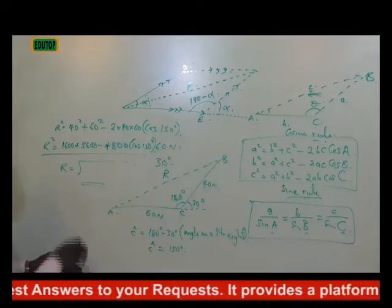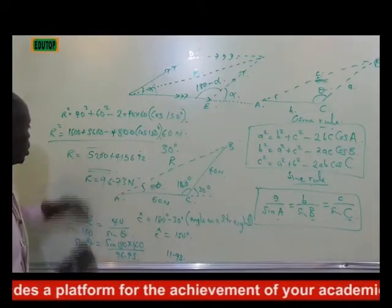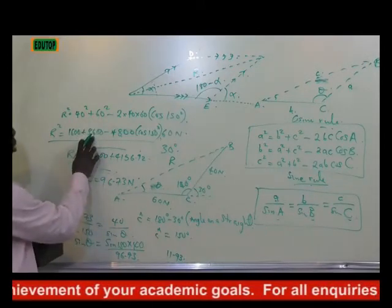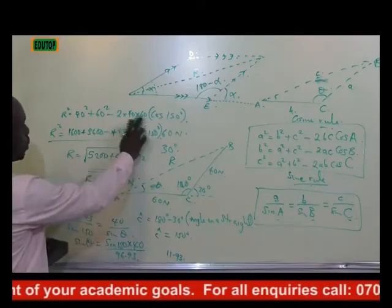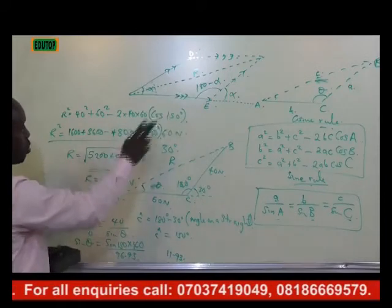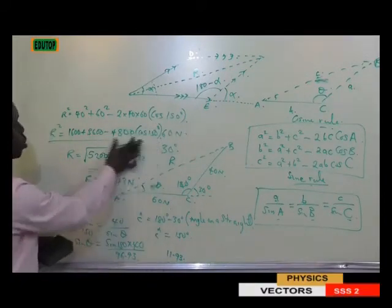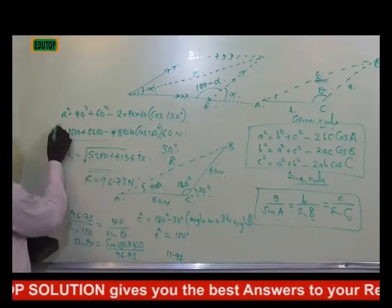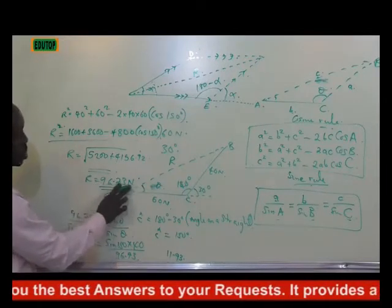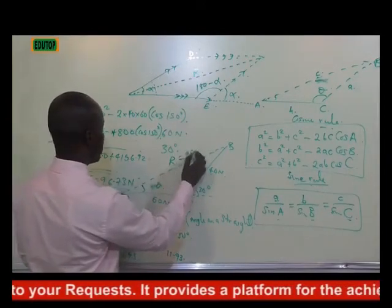Let's punch our calculator. After punching your calculator, you obtain something like this. The addition of the square of 40, the square of 60. By the time you multiply this, you have 40 times 60, that's 2 times 400, times 2 you have 4800, then cos 150. So by the time you solve all this, you bring the square root down here, you have your final result at 96.73. So our resultant here is 96.73 Newtons.